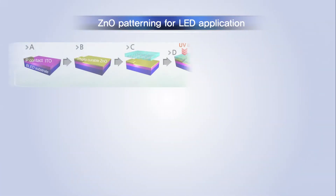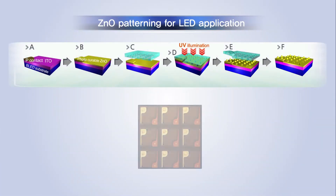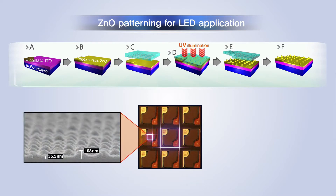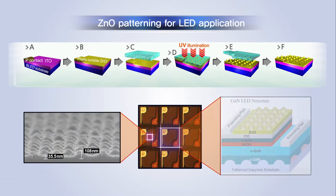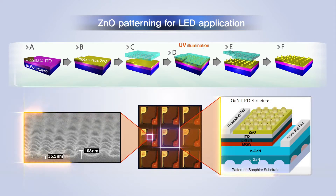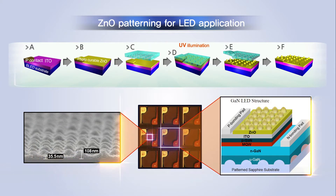Dr. Jung's team developed an OLED manufacturing process that improved OLED power efficiency by more than 93% and luminance efficiency by more than 50% using Metal Oxide Direct Nano Imprint Lithography Technology.